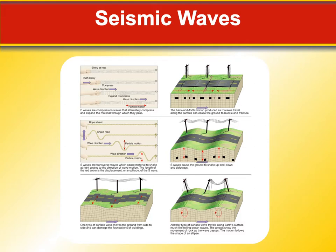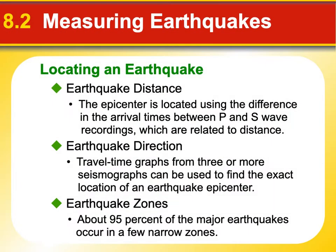Looking at a diagram of the actual earth: the top diagram shows the back-and-forth motion produced by P waves — they can cause the ground to buckle and fracture, compressed and pulled apart repeatedly. The S waves shake up and down and sideways: as they travel forward, the ground lifts and falls or goes side to side. There are also other types of surface waves that move the ground side to side or in a rolling motion.